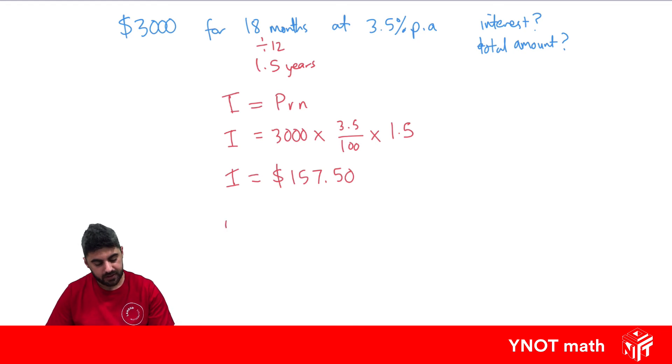To get our total amount, that's just going to be our principal plus our interest. So it's going to be 3,000 plus $157.50 to give us a total amount of $3,157.50 by the end of 18 months.